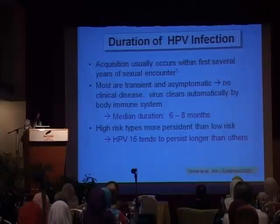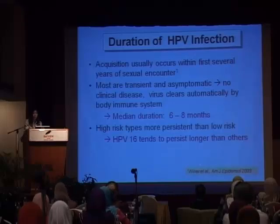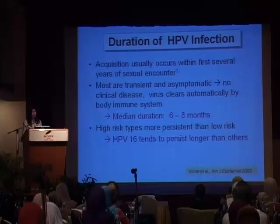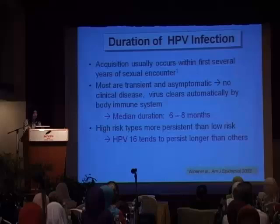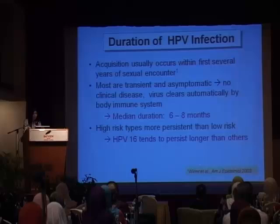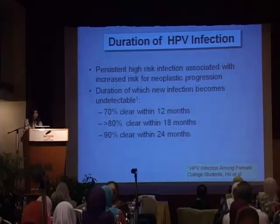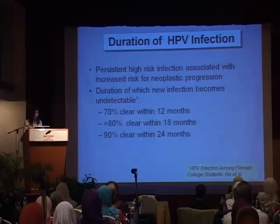Acquisition of the infection occurs within the first several years of sexual encounter. Most of these infections are fortunately transient and asymptomatic — there is no clinical disease, and the virus will clear automatically by the body's immune system. The mean duration of infection is said to be between six to eight months, after which they will clear. However, the high-risk types of HPV are more persistent than low-risk types, and HPV-16 has been shown to persist longer than the others. Persistent high-risk infection is associated with increased risk of progression to neoplastic disease.